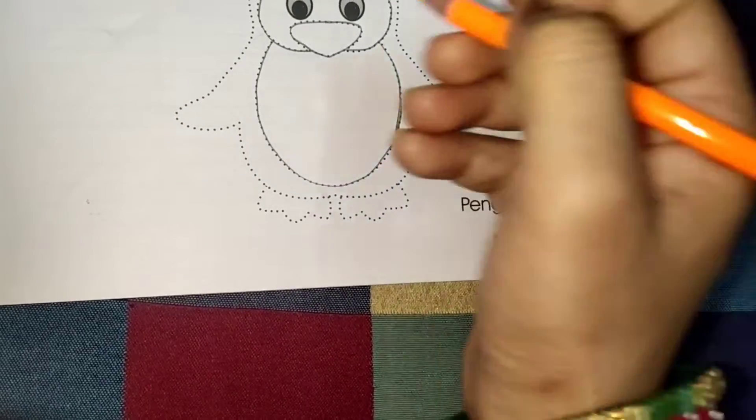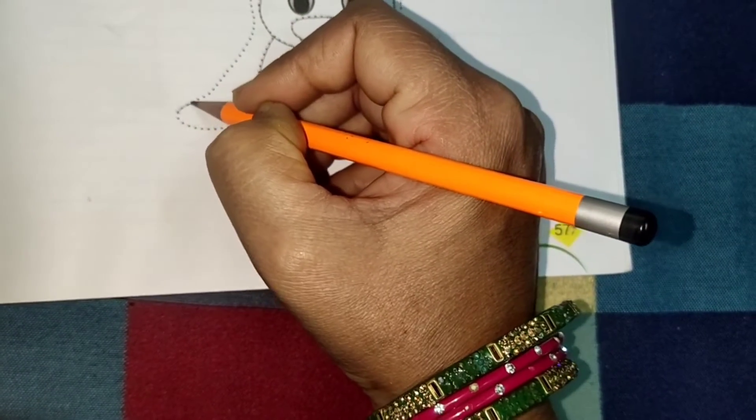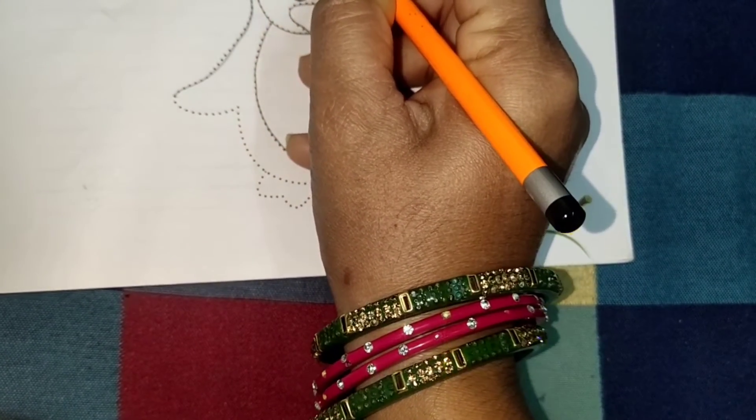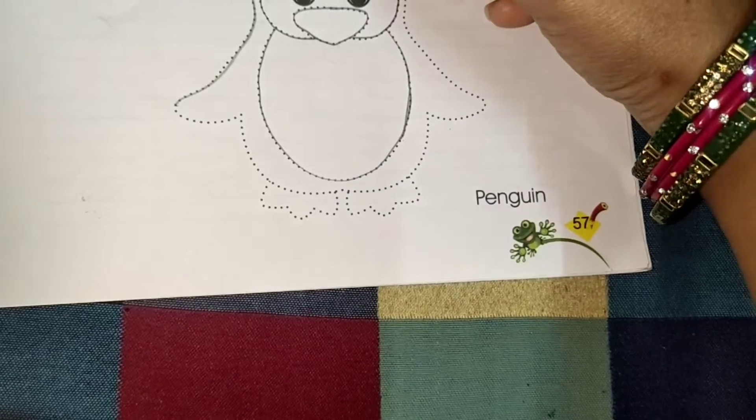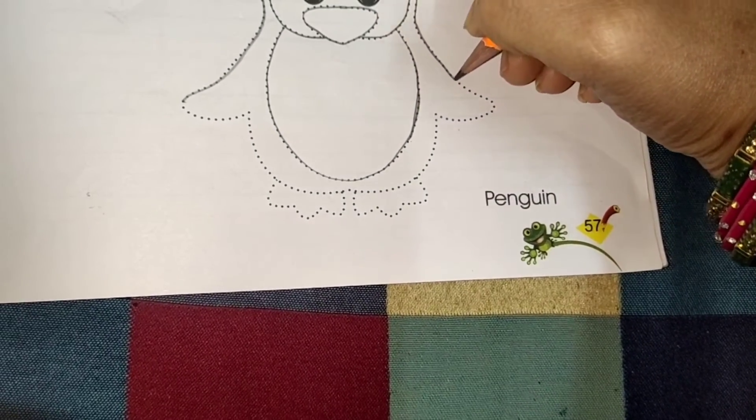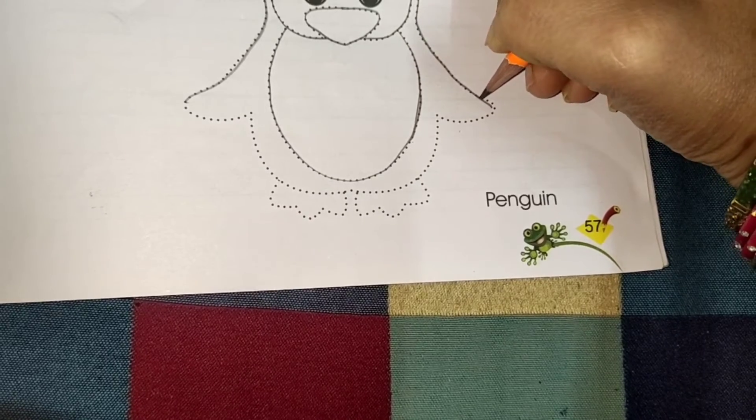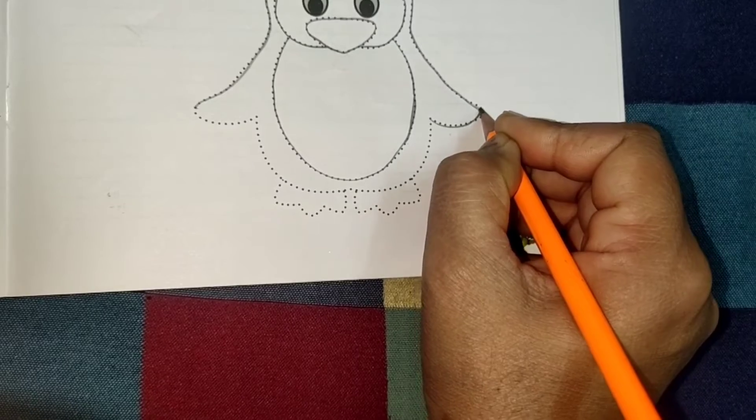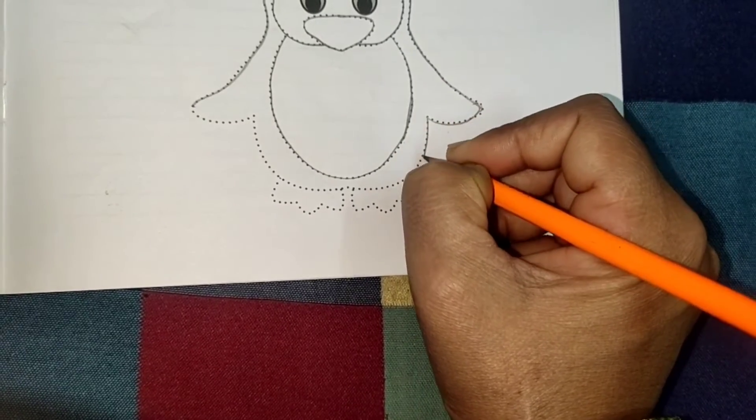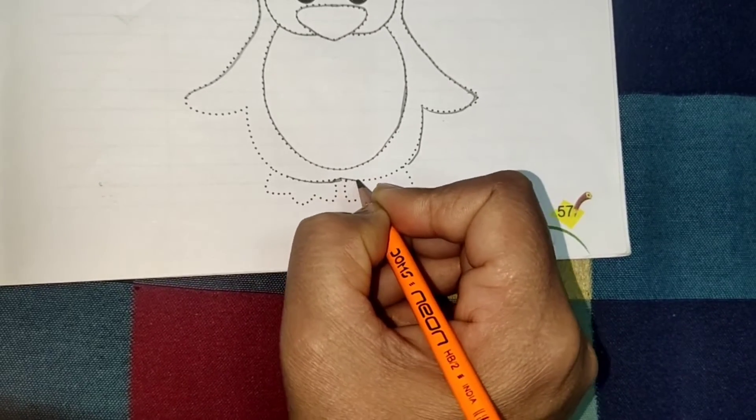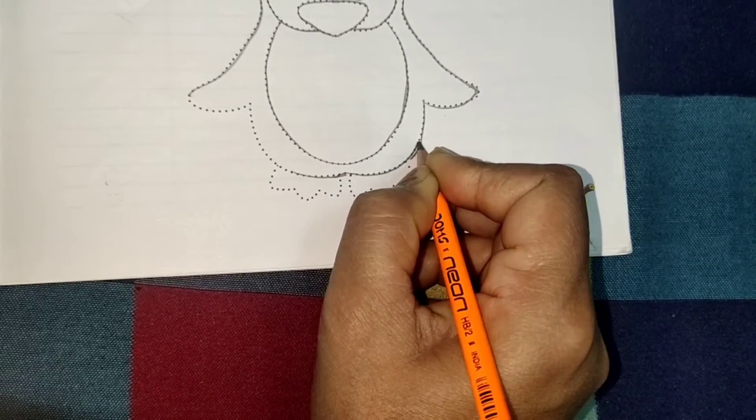Okay. Yeh dekho. Ma'am kaise dots ko join kar rahe hai? Aapko bhi isi tarah se dots ko join karna hai. And make a penguin. Or bilkul dots ke upar upar hi line banani hai. Okay. Agar aap dots ke upar upar line nahi banayenge, to aapka penguin phir sundar nahi dikhega hai na.